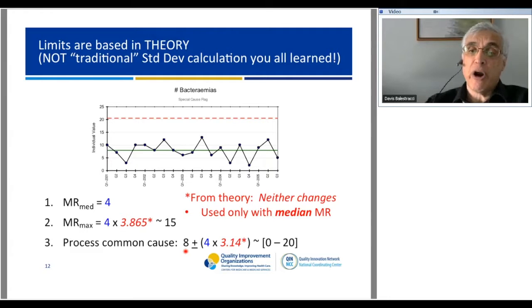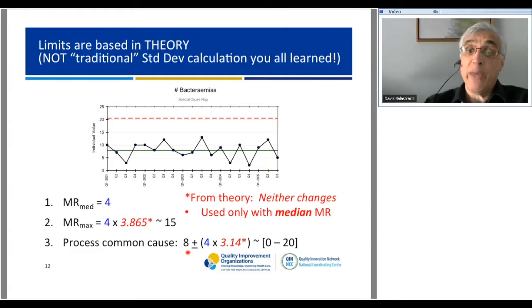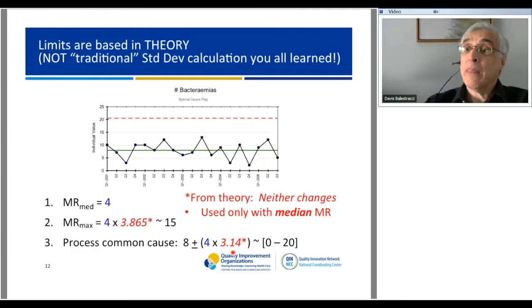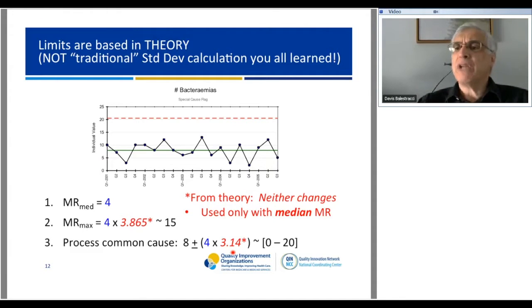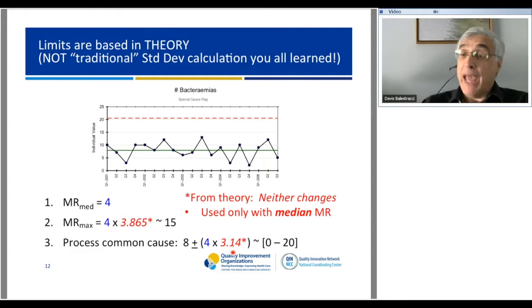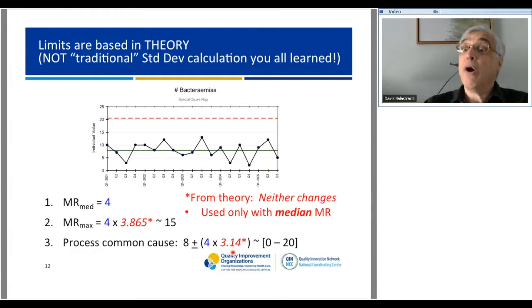The other thing we calculate: since the run chart showed no special causes, I can calculate the average—it's about 8. Now I need to find the dead band of common cause around that average. The way we get that is the median moving range times 3.14, which is a number from statistical theory and has nothing to do with pi. That gives you the dead band of common cause on either side of the average. In this case it would be approximately 8 plus or minus 12. Here's something important if you present charts like this to doctors: 8 minus 12 is a negative number—don't ever put a chart with a nonsensical negative number in front of doctors. You can't have a negative number of bacteremias—set it equal to zero. So in any one quarter, averaging 8, given this pattern of variation, we will observe between 0 and 20 bacteremias.